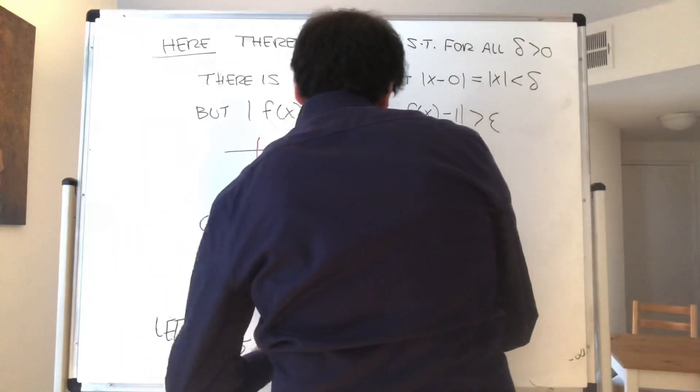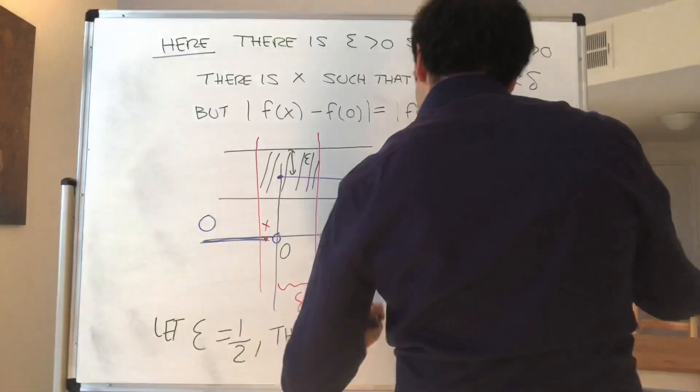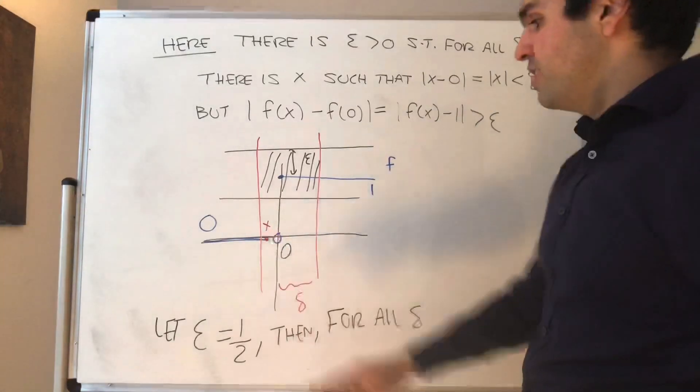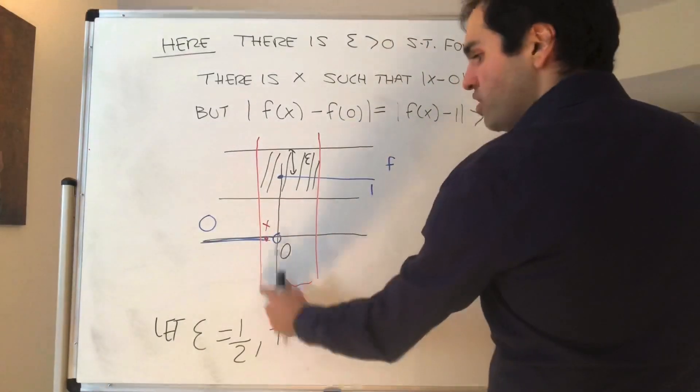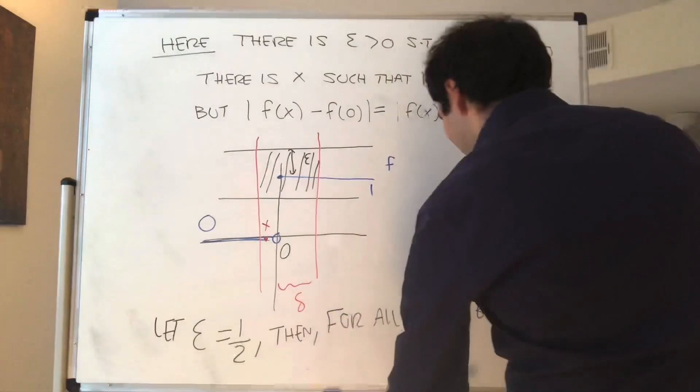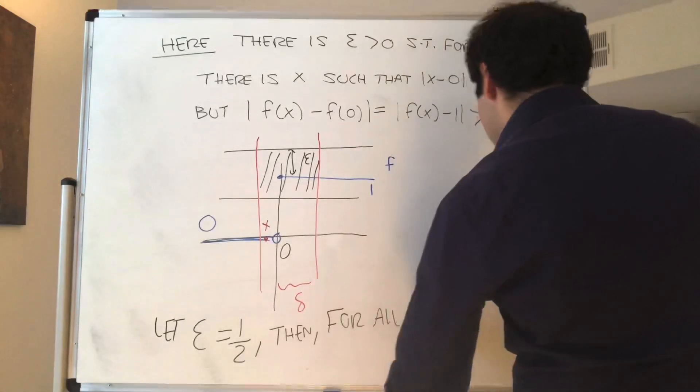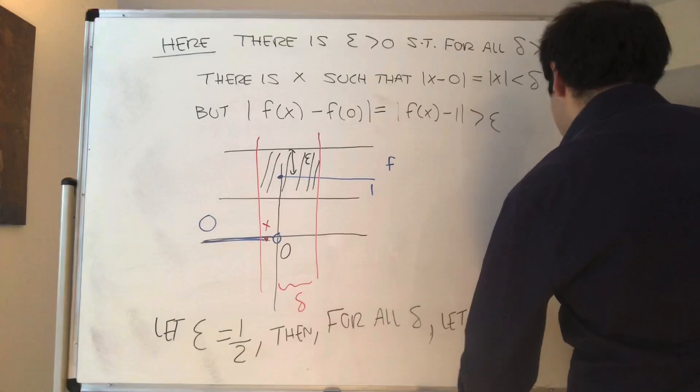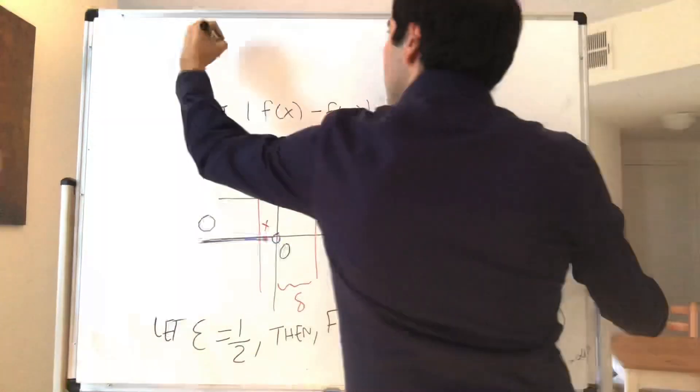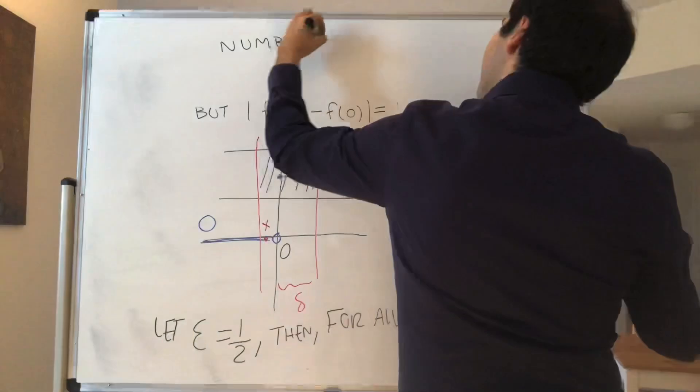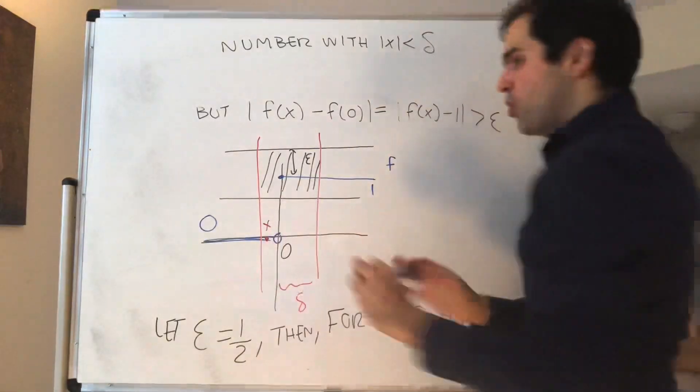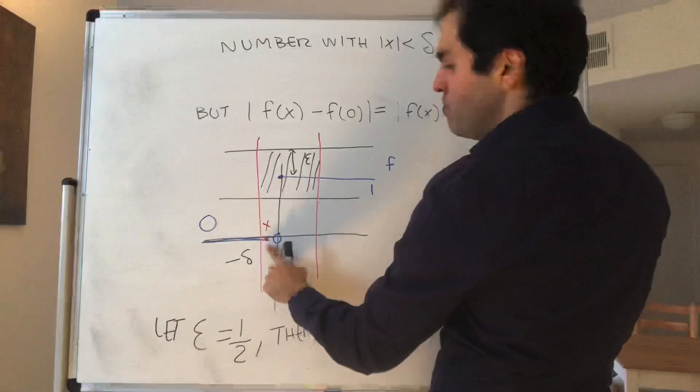So let epsilon be 1 half, then for all delta, how do you choose your evil counterexample? Just let x be in that region, but negative. Let x be any negative number with absolute value of x to be less than delta. For instance, if you want to be super concrete, we can just choose x to be minus delta over 2.